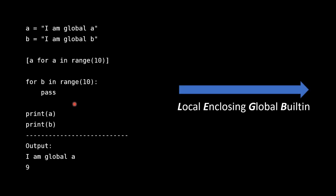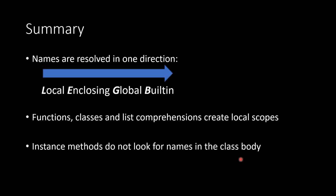By knowing which constructions create their own local scope — functions, classes, and list comprehensions — and by knowing the LEGB rule, we essentially always know the scope of a name. The key takeaway: names are always resolved in one direction, from local to enclosing to global to built-in. Remember the important exception that instance methods do not look for names within the class body. Thank you for watching and see you in the next one.